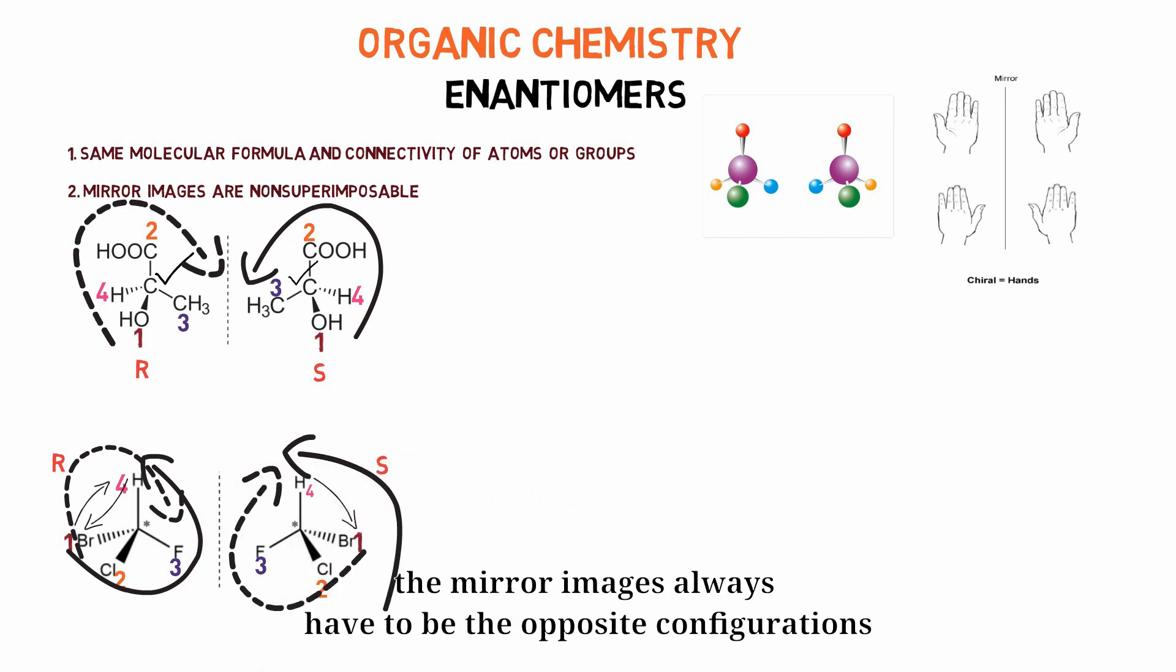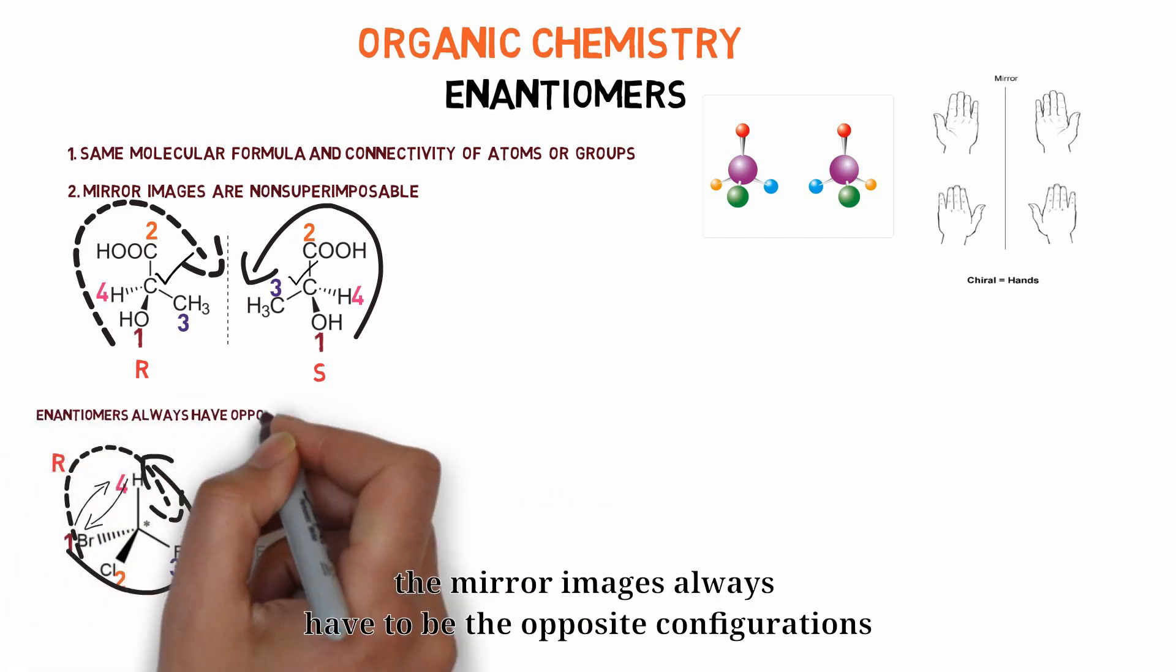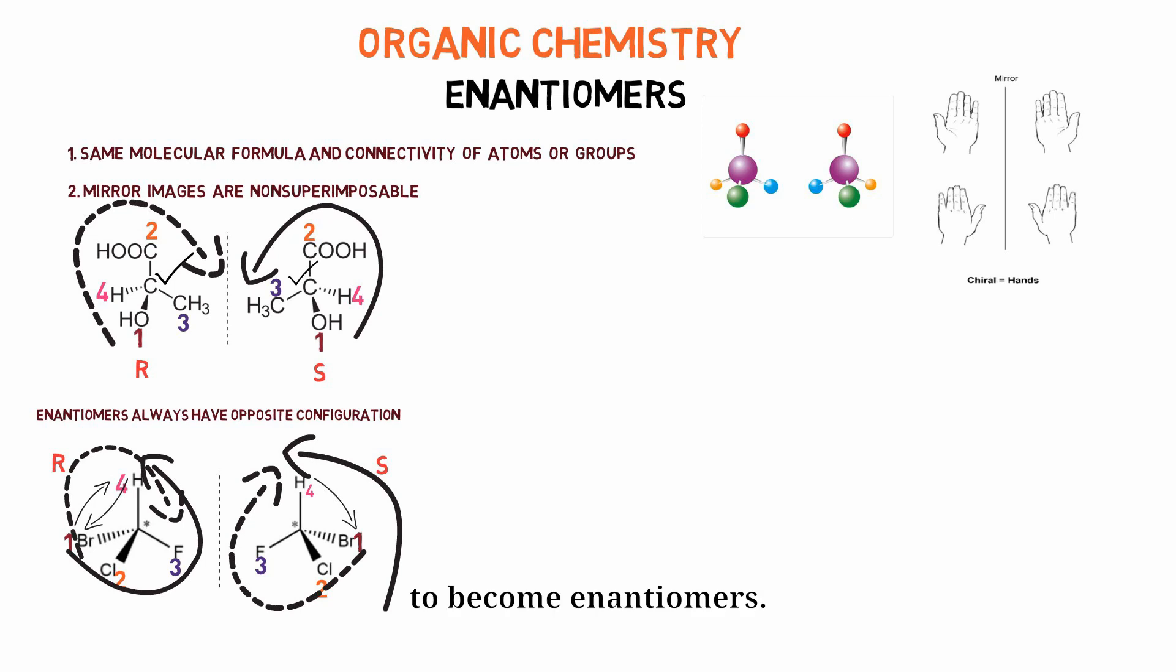One thing we'll notice here that the mirror images always have to be the opposite configurations to become enantiomers. And also the enantiomers cannot have any plane of symmetry. Then it will be mesocompounds.